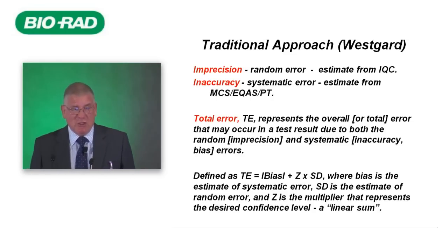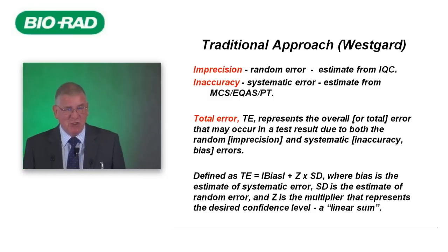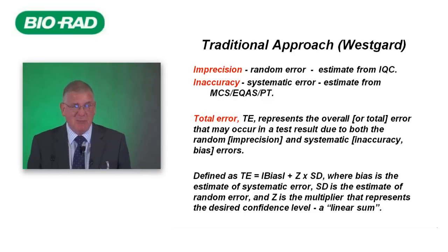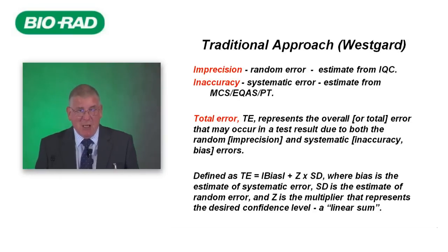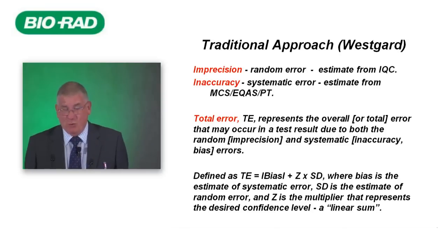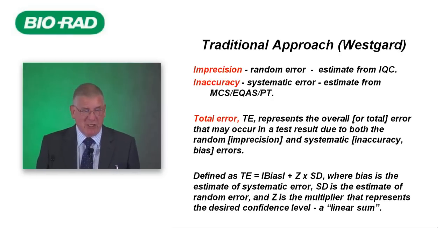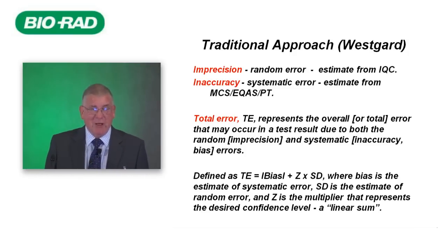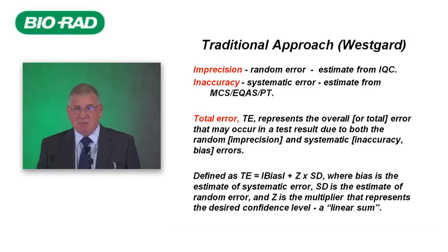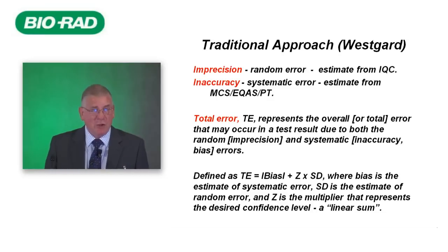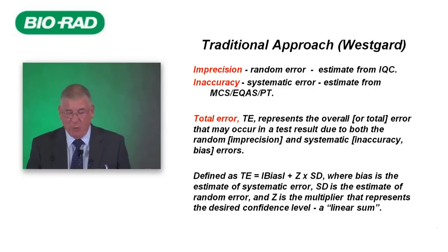The traditional approach, often attributed to Jim Westgard, uses imprecision — random error — estimated from internal quality control, and inaccuracy or bias — systematic error — estimated from method comparison studies or external quality assessment schemes. Total error represents the overall error that may occur in a test result due to both imprecision and bias. Total error is usually calculated as the modulus of bias plus the standard deviation multiplied by a coverage factor depending on probability. According to some, this is a linear sum; to others, it is like adding an apple and an orange.